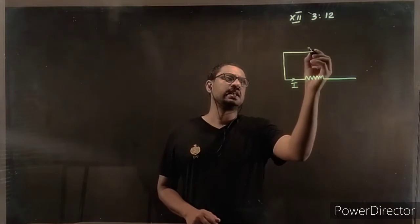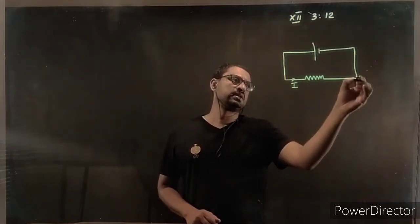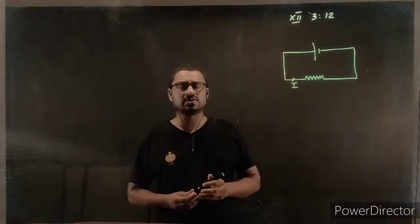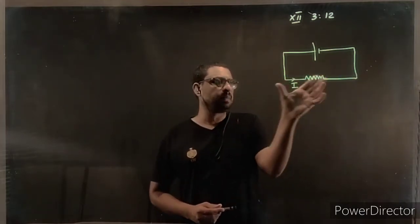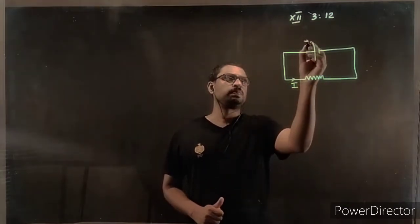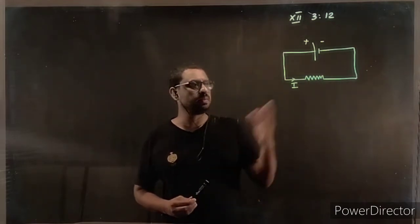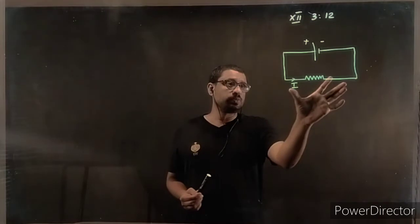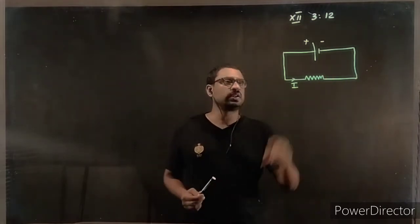We are going to understand some terms in an electrical circuit. There is a resistor — a resistor is nothing but a conductor. For current to flow through the conductor, it should be provided with a cell. A cell is an agent which maintains a potential difference between the ends of the conductor. One side is positive (high potential), the other is negative (low potential), and a constant potential difference is maintained between the ends using this cell.